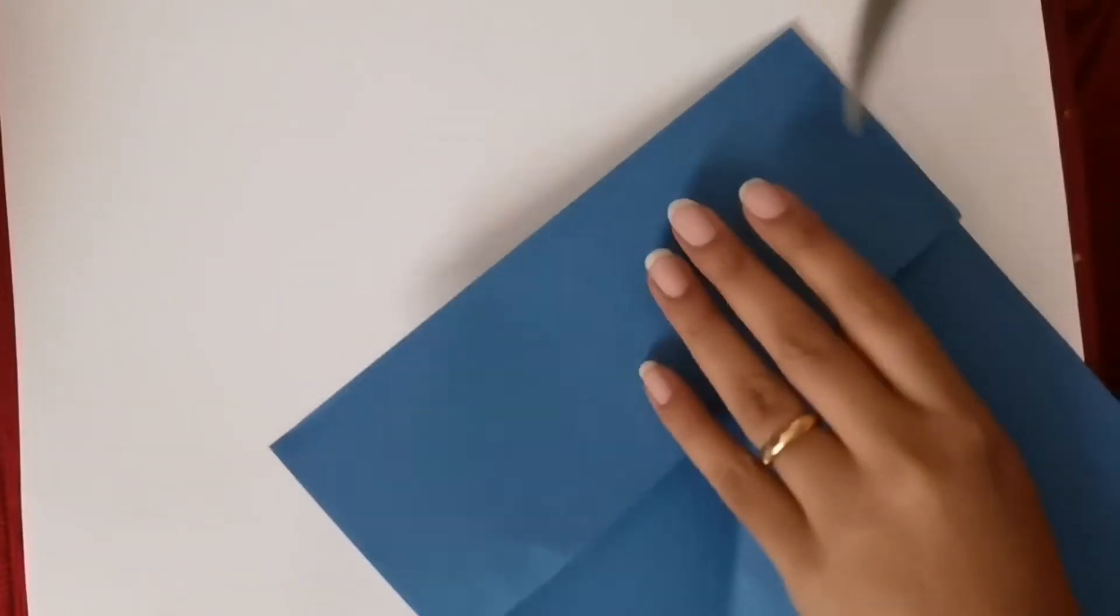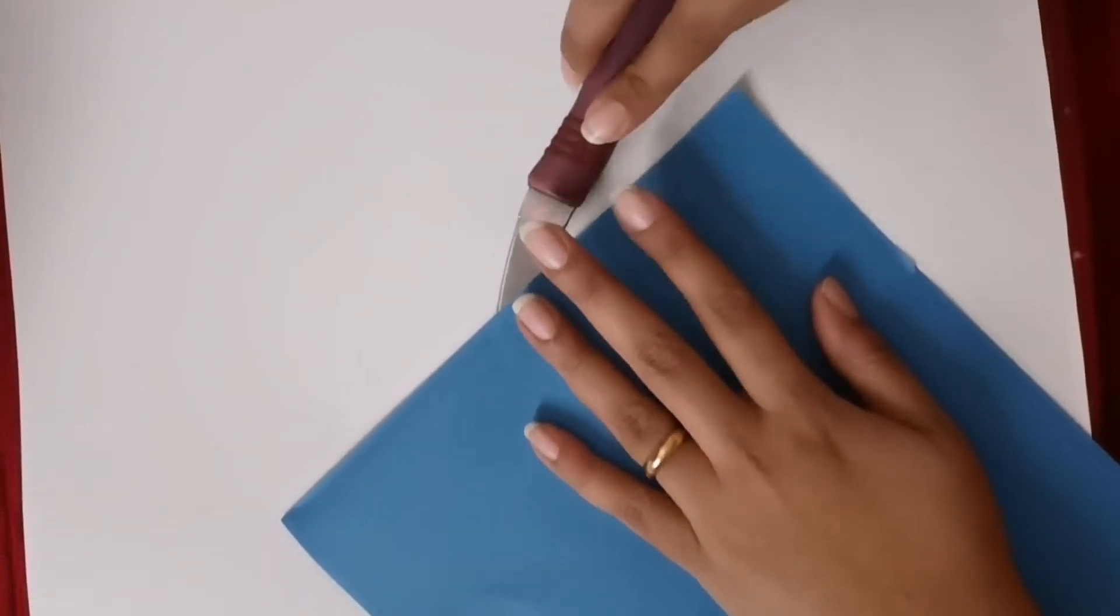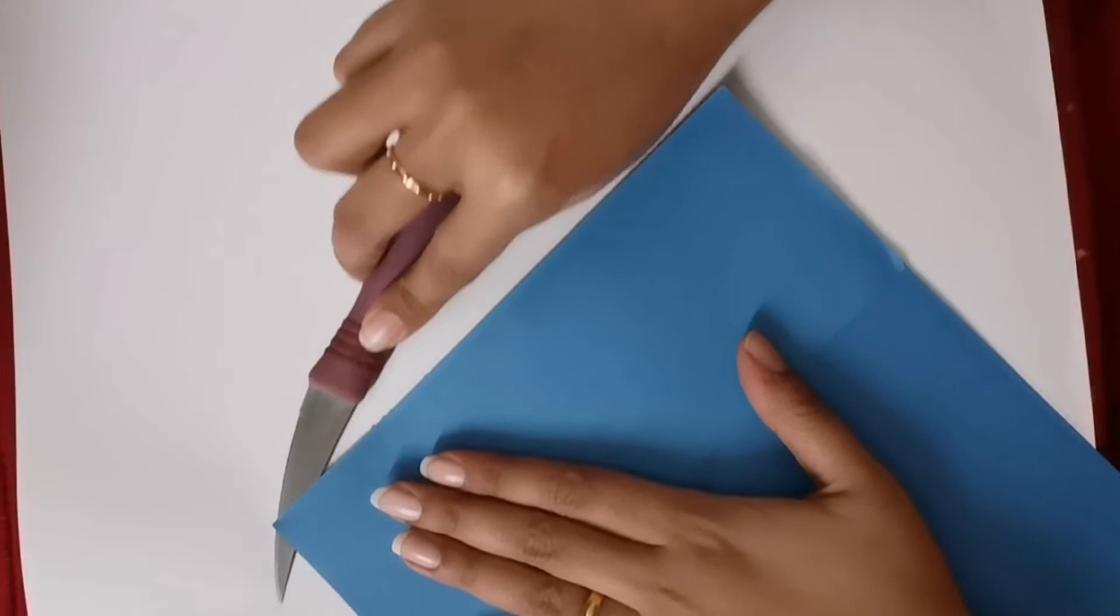I'll just tear off this place where I'm folding. I'll give it a nice fold and I'll just tear it off with the knife. Just be careful when you are using the knife so that you do not hurt yourself. I'll get rid of that extra portion of the paper.